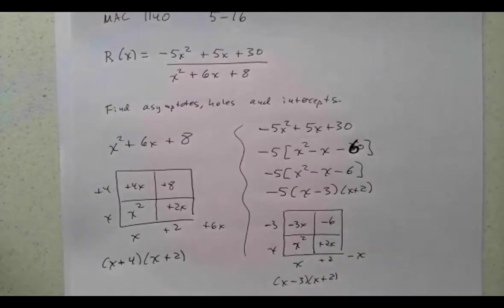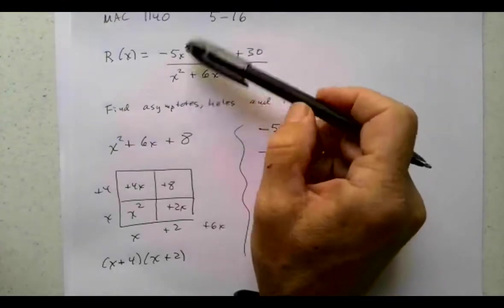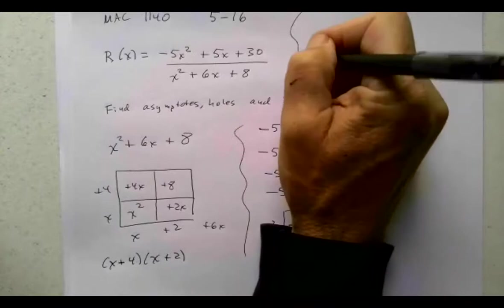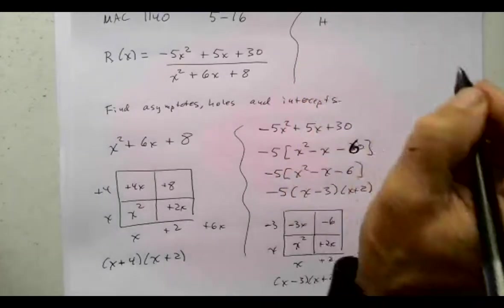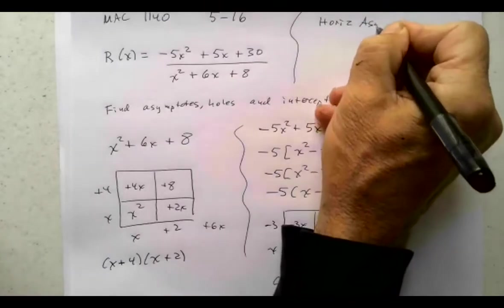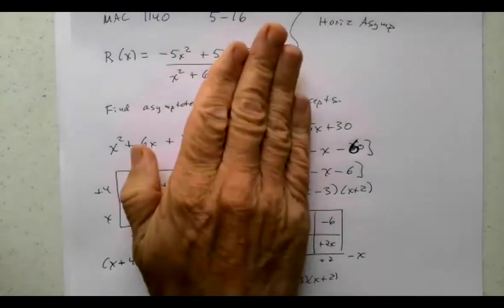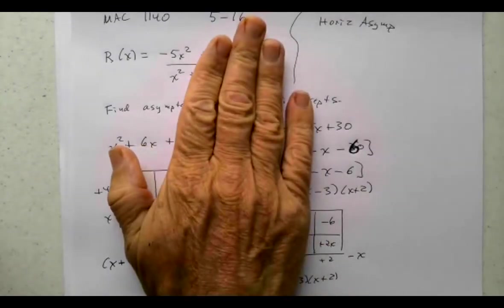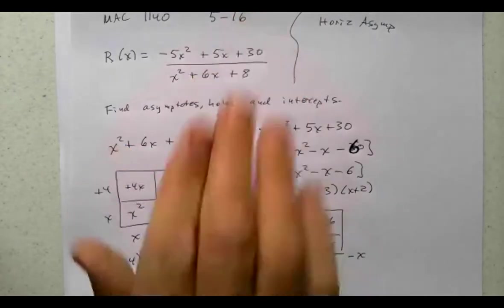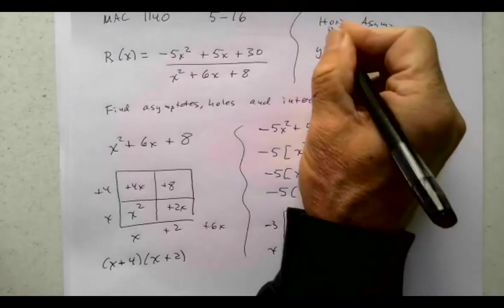Before going on, I should have noticed that the degree of the top and bottom are both 2, so we can get the horizontal asymptote just by looking at the leading terms. Negative 5x squared over 1x squared gives me negative 5. So the horizontal asymptote is y equals negative 5.